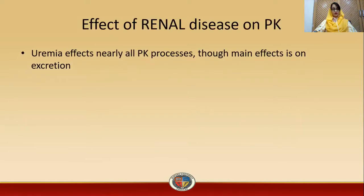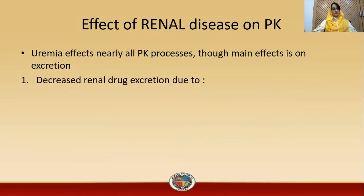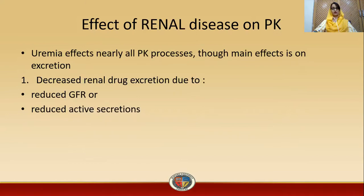Uremia affects nearly all pharmacokinetic processes, though the main effect is on excretion. Renal drug excretion is reduced due to reduced GFR — that is, reduced glomerular filtration rate — or due to reduced active secretion. Active secretions usually occur in the proximal convoluted tubule, loop of Henle, and distal convoluted tubule, and reabsorption of drugs from the tubules is also affected by uremia.